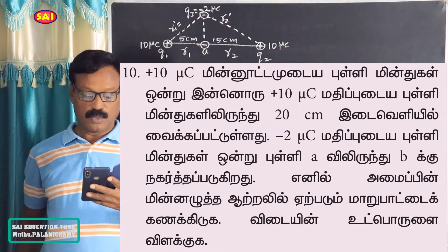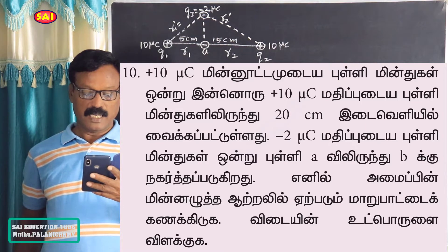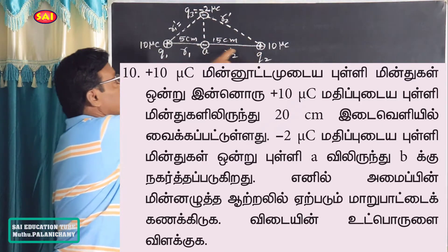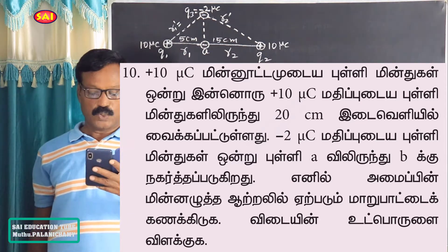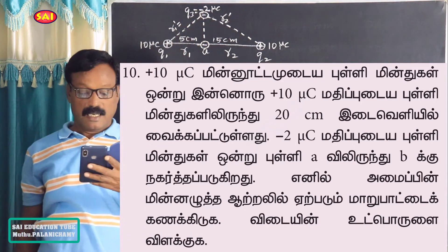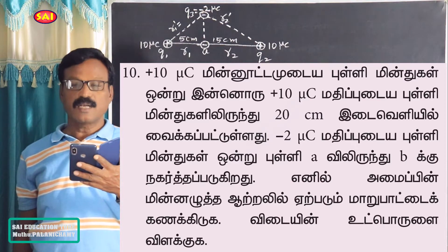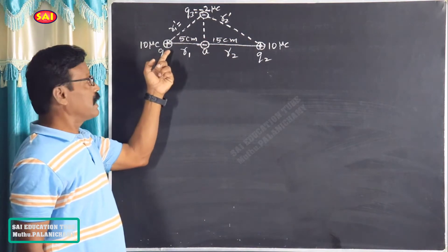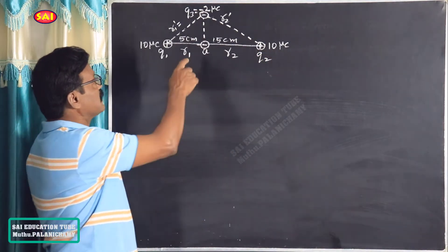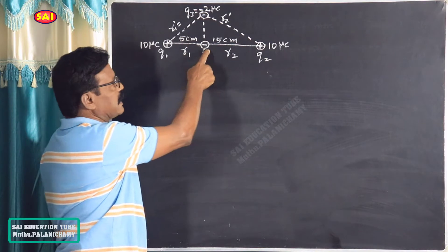The +10 microcoulomb charge is Q1, the second +10 microcoulomb charge is Q2, and the -2 microcoulomb charge is Q3, which is moved from point A to point B. The charge Q3 is at point A initially, and the distance from Q1 to Q3 at point A is 15 cm.